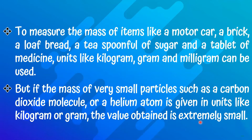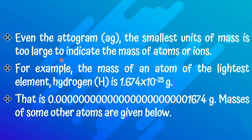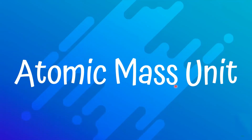Even the attogram — the smallest unit of mass, symbolized as ag — is too large to indicate the mass of atoms or ions. For example, the mass of an atom of the lightest element, hydrogen, is 1.674 × 10⁻²³ grams, which is an incredibly small decimal value. This is why standard mass units are not practical for atomic-scale measurements.